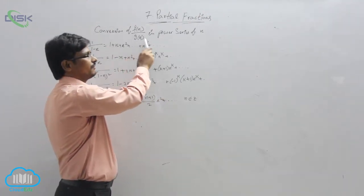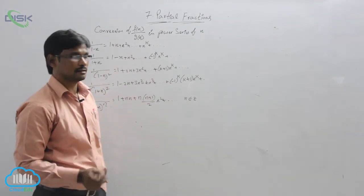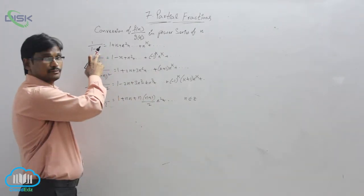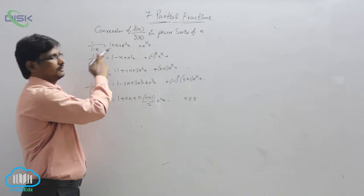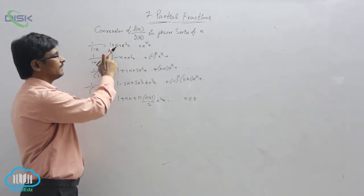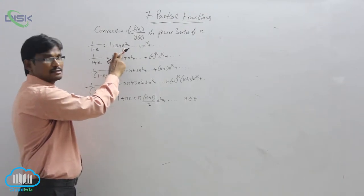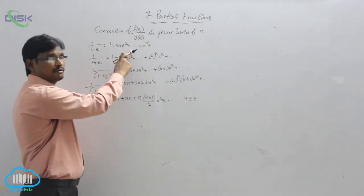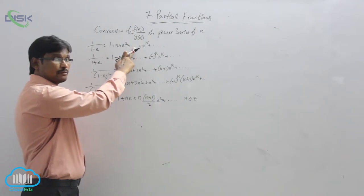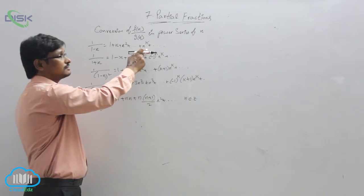To convert fractions f(x) by g(x) into a power series of x, observe here: 1 by (1 minus x) is a fraction. The power series expansion will be 1 plus x plus x squared plus x cubed plus x to the power 4, and so on, up to x to the power k as the general term.